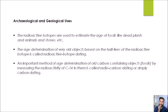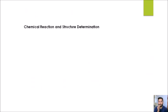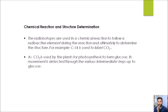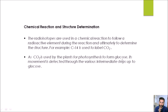The fourth use is in the chemical industry. Radioisotopes are used in chemical reactions to follow radioactive elements during the reaction and ultimately to determine the structure. For example, carbon-14 is used to label carbon dioxide. In plants, photosynthesis produces glucose, which is made up of carbon. By tracking the labeled carbon dioxide, we can find out how much photosynthesis or how much glucose is being produced during photosynthesis in the plants.